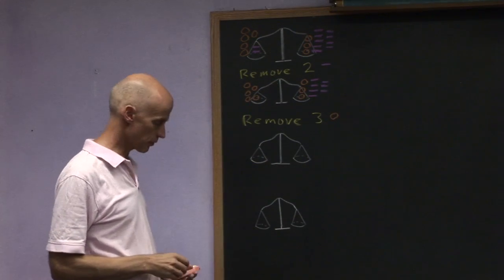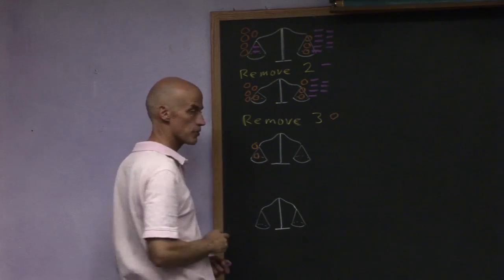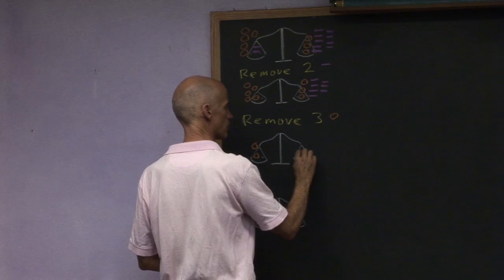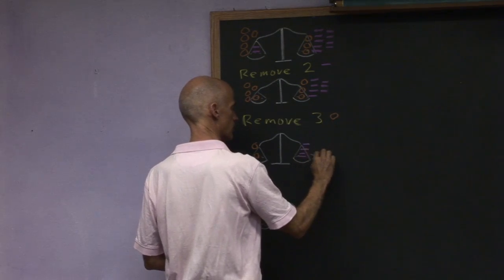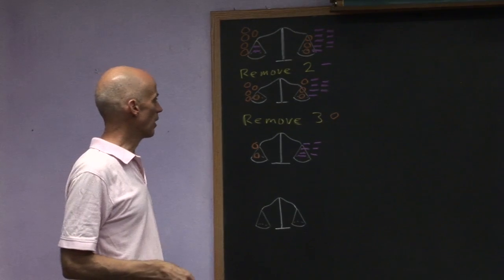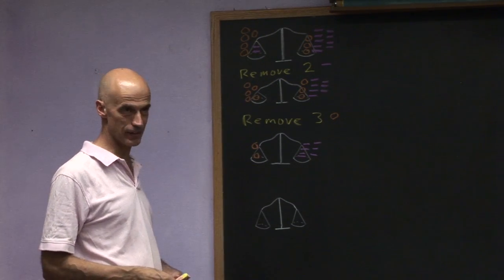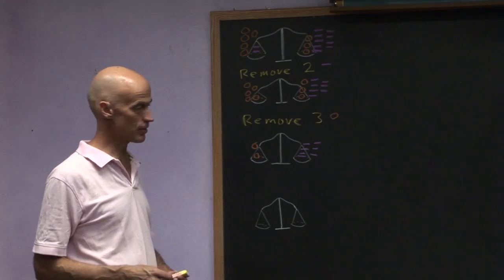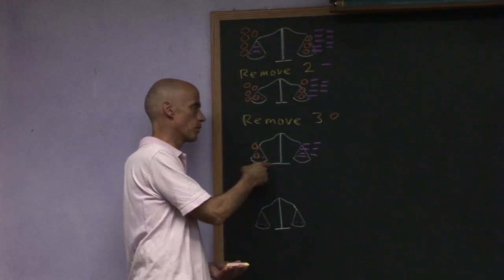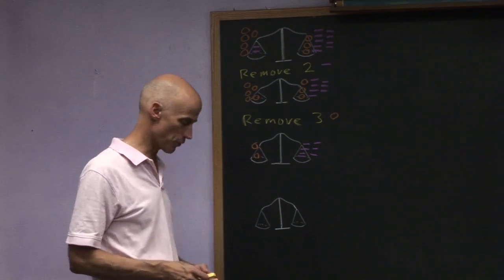And by removing three sacks from each side, I then had two sacks on the left and seven hex nuts. Now, of course, the last stage to solve the puzzle we basically did in our head. And what we did is we reasoned that if there are two sacks on one side and seven on the other, that therefore if we divide both sides by two,